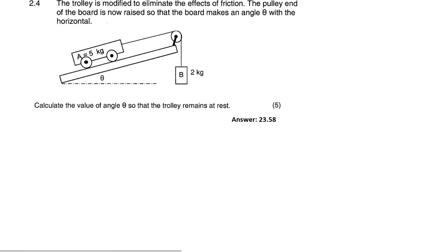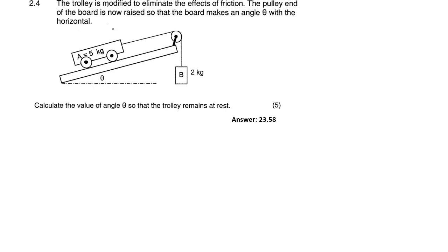Here is our last one — question 2.4. The trolley is modified to eliminate the effects of friction. When they say that, they mean it's going to be put on an angle so there will be no friction. It says: calculate the value of the angle so that the trolley remains at rest. Since the objects are not moving, the acceleration is zero — that is very important. Also there is no friction. Whenever we have two objects connected with a rope, we can use the three-step scenario.